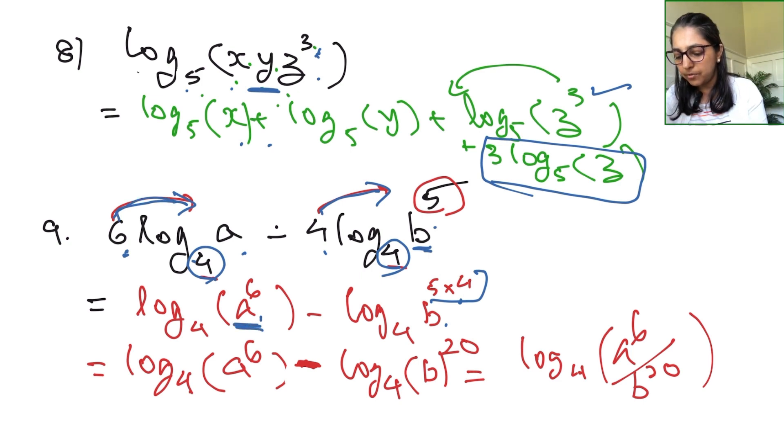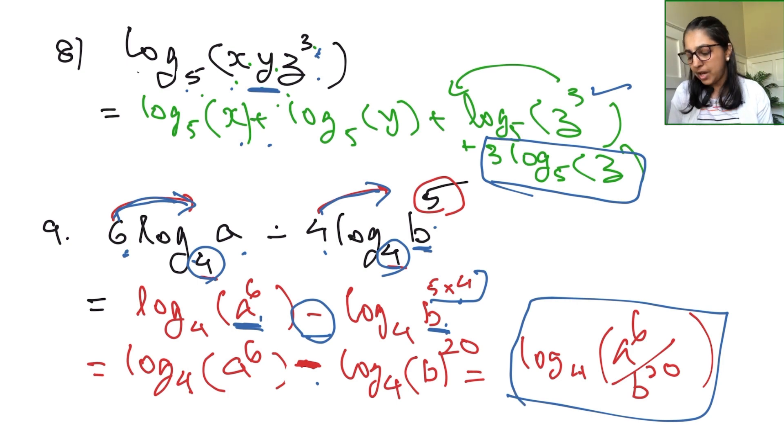Let's get back to the question. So a^6, this becomes a^6 right here. This will become b^20, and we see a minus sign in between. When there's a minus sign in between terms, we know that's going to be a quotient rule. Hence the answer becomes log base 4 of (a^6)/(b^20). That's the answer.